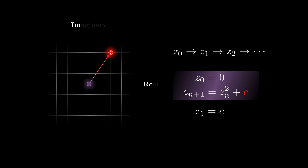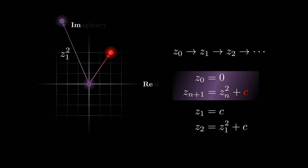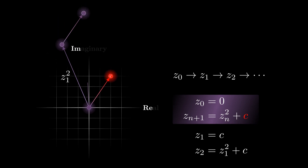Therefore, C is in some sense the starting point of the sequence, and for every different value of C the sequence will behave differently. To calculate Z₂, we first have to square Z₁, which is always equal to C. We then obtain a complex number with an angle twice as large as the angle of C, and a magnitude equal to the magnitude of C raised to the power of 2. After adding C to this number, we obtain Z₂, the third number of the sequence.